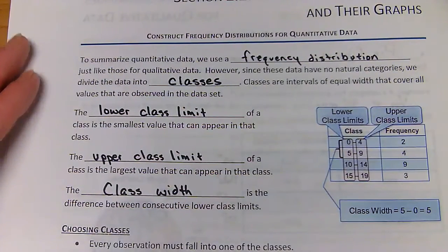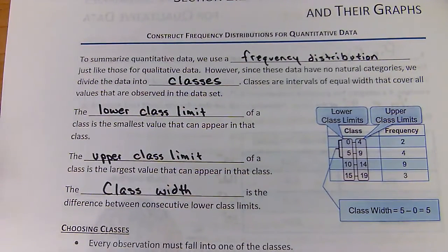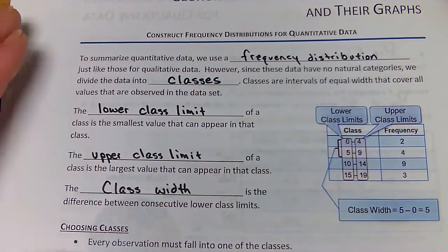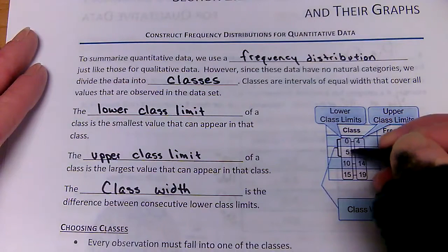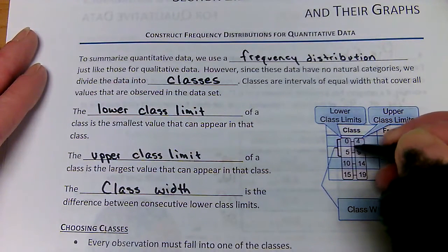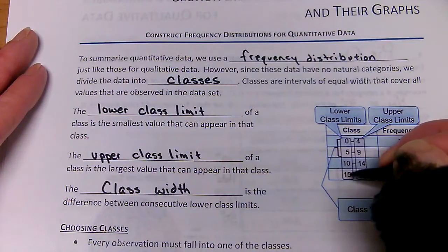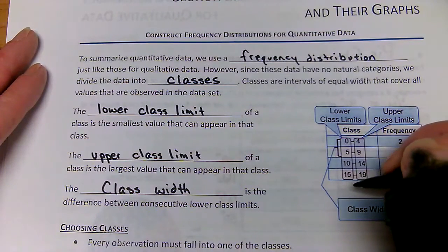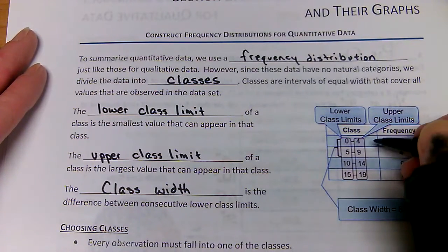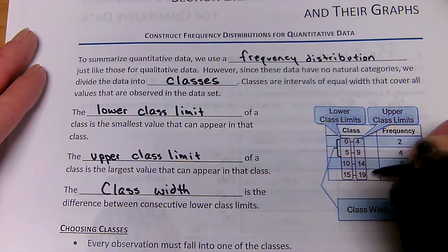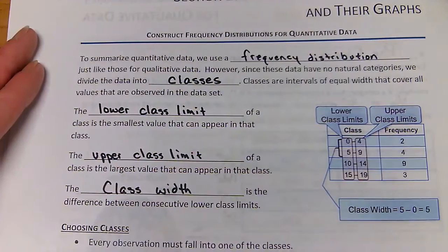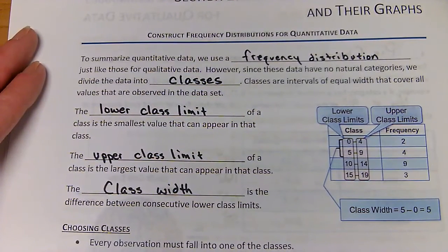The class width is the difference between consecutive class limits. So zero to five, the difference would be five, so my class width is five. You could even look at the upper class limits: four plus five is nine, plus five is 14, plus five is 19. So class width is the difference between those limits.